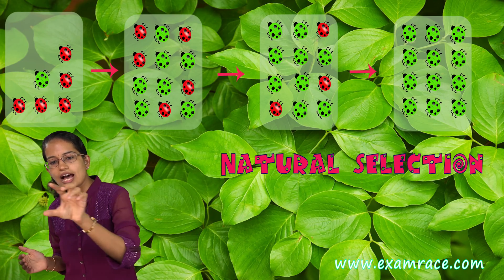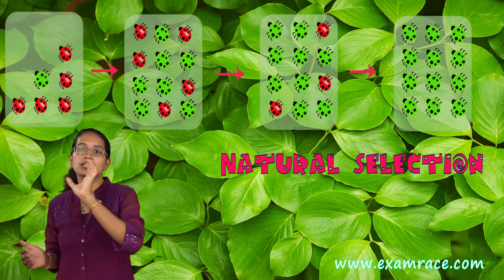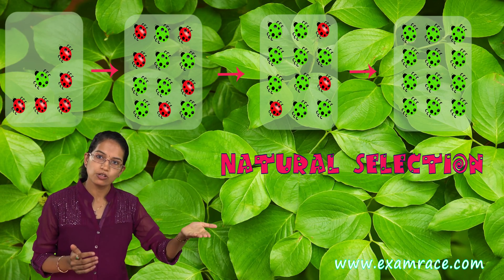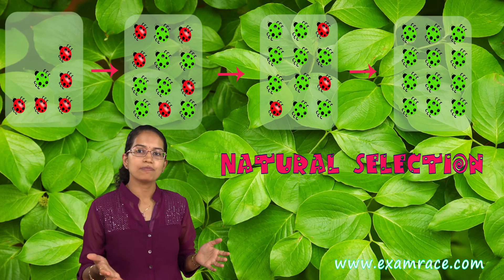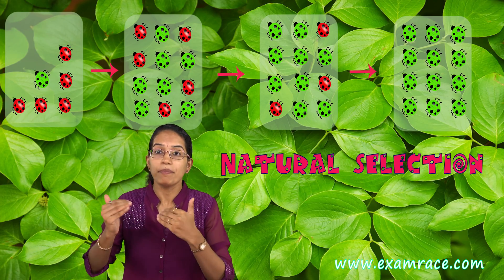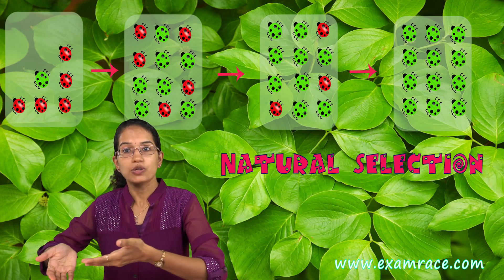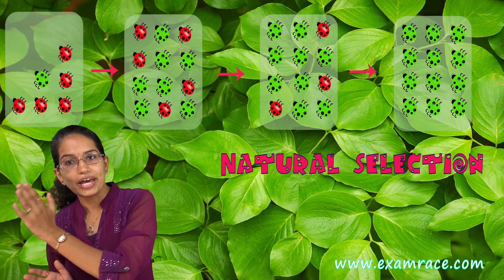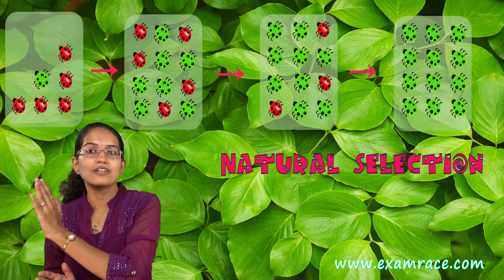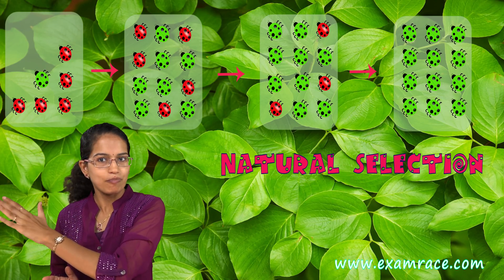This natural variation occurred because of the color in this case, and the species which were better adapted to the surrounding were well adjusted and could survive better.